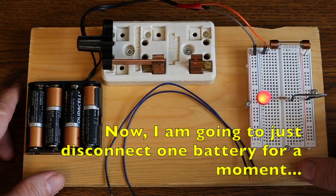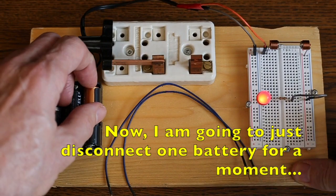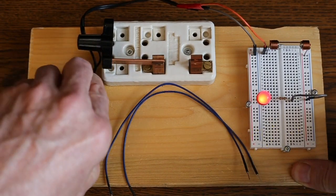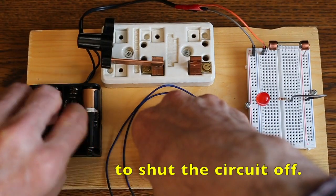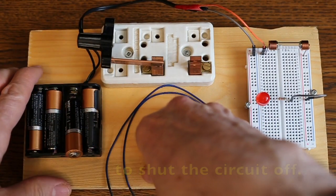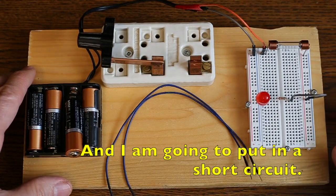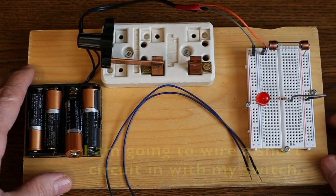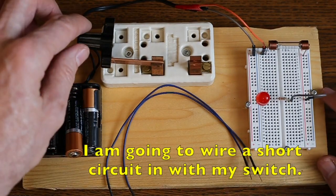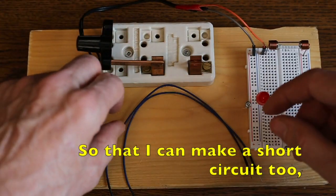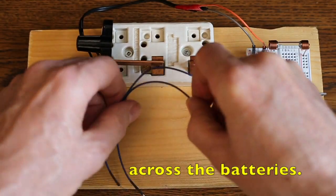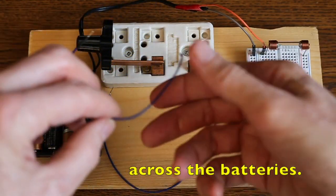Now, I'm going to just disconnect one battery for a moment to shut the circuit off. And I'm going to put in a short circuit. I'm going to wire a short circuit in with my switch, so that I can make a short circuit across the batteries.